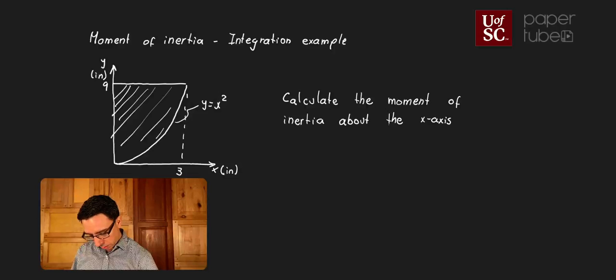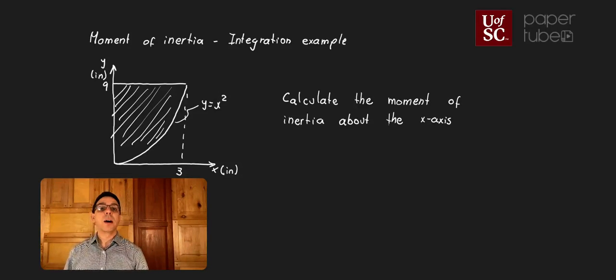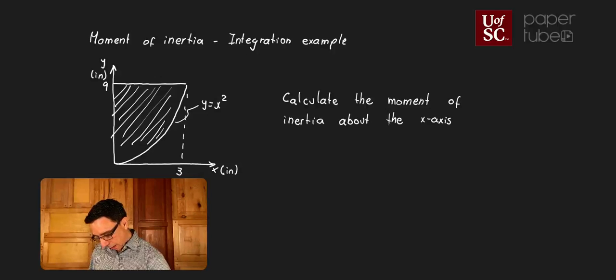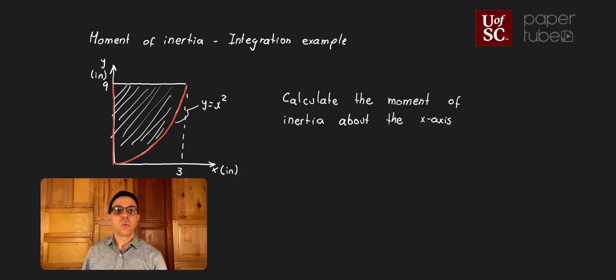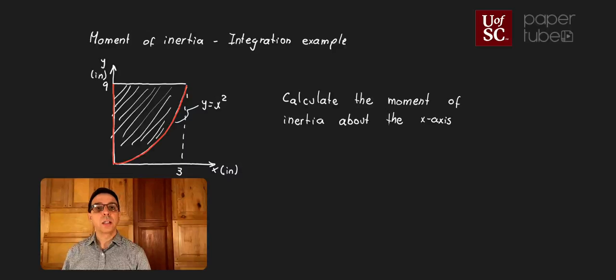It's this part that is defined by the vertical axis, this y-axis, on one side. Let me change the color so that becomes a little bit more evident. So it is defined by this vertical axis, is defined by this equation over here, and that equation is y equal to x squared, and is defined by this horizontal line which is the value of y equal to 9 inches.